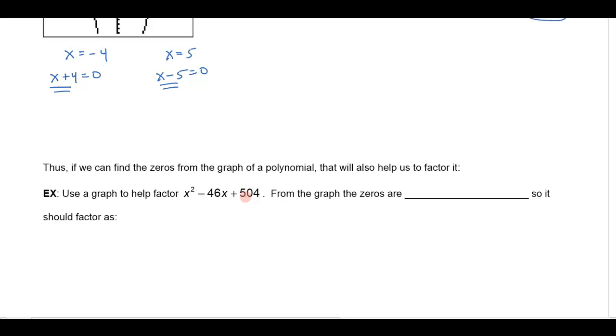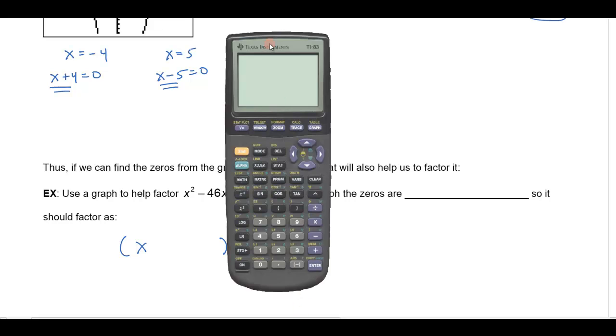These numbers are really big. And so if I want to factor x² - 46x + 504, I have to ask myself, what are the factors of 504 that will give me 46 in the middle? And I don't know any factors of 504. I'd have to get my calculator out with some pencil and paper and really think and figure out what all those factors are. But what I can do instead is I can use my graphing calculator to graph the corresponding polynomial.